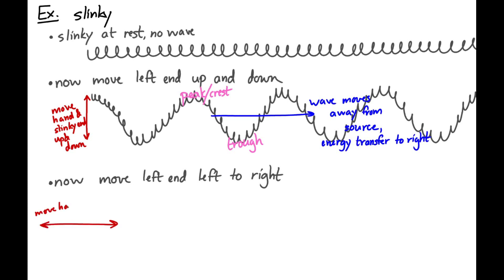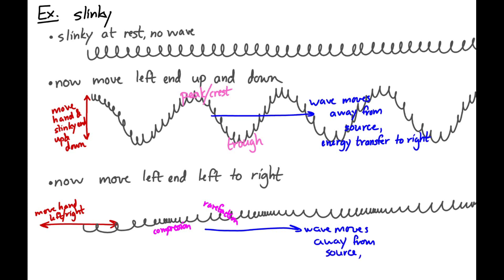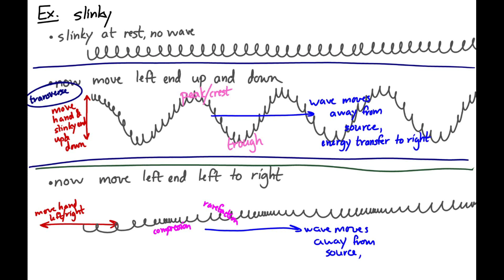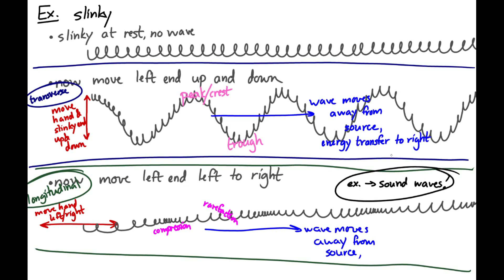However, if I move the end of the slinky from left to right, I get a wave traveling through the slinky that looks different — areas of compression and rarefaction — and the wave travels to the right. Moving my hand up and down gives a transverse wave; moving it left and right gives a longitudinal wave. One type of longitudinal wave is sound waves, which we'll look at a bit later.